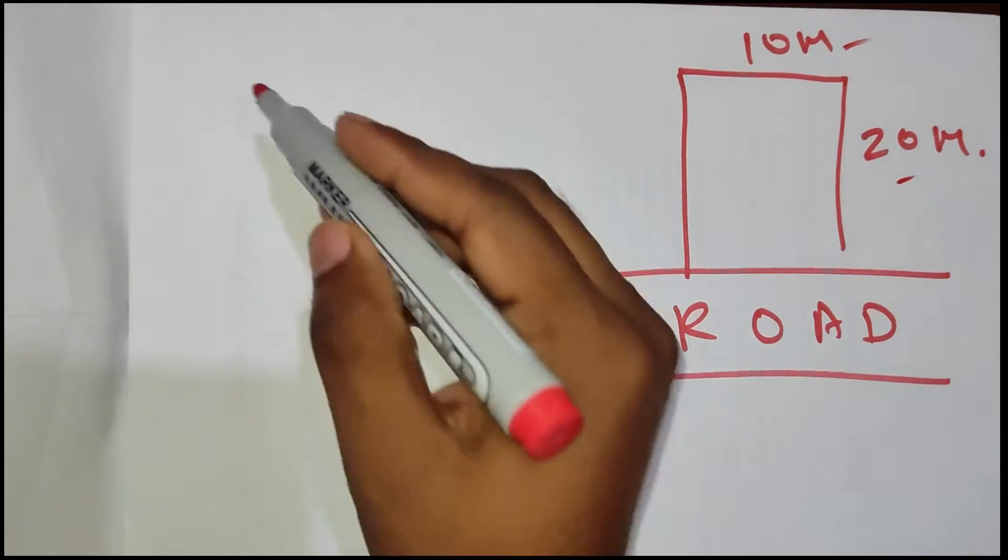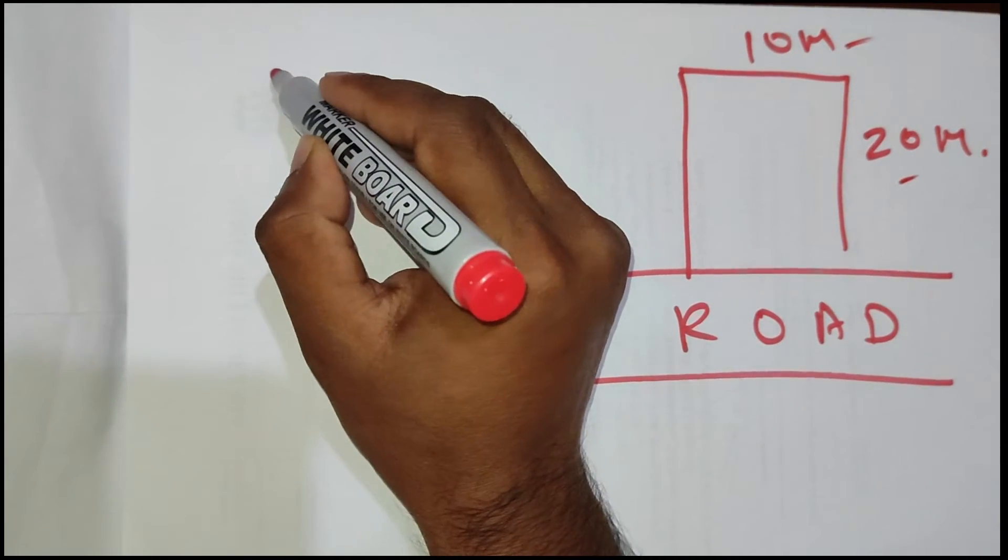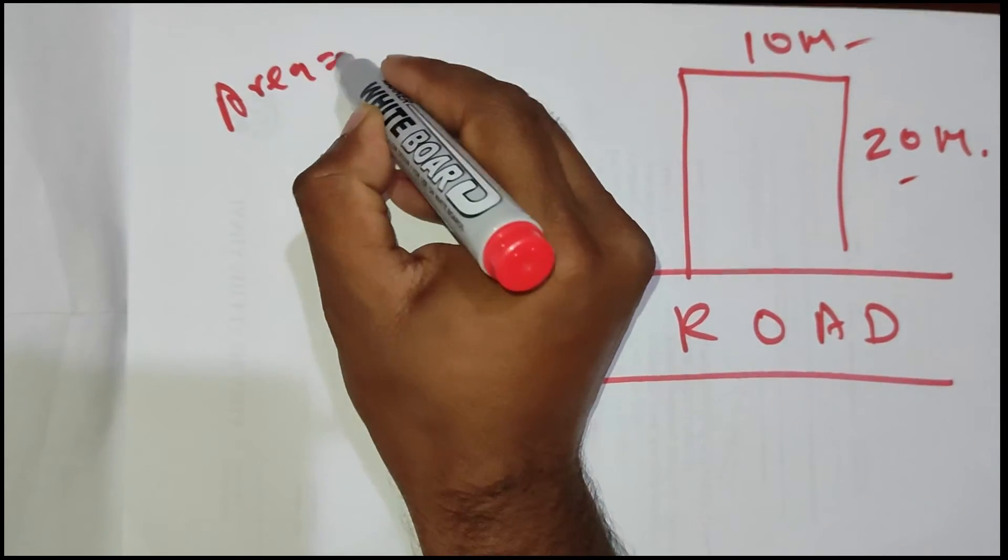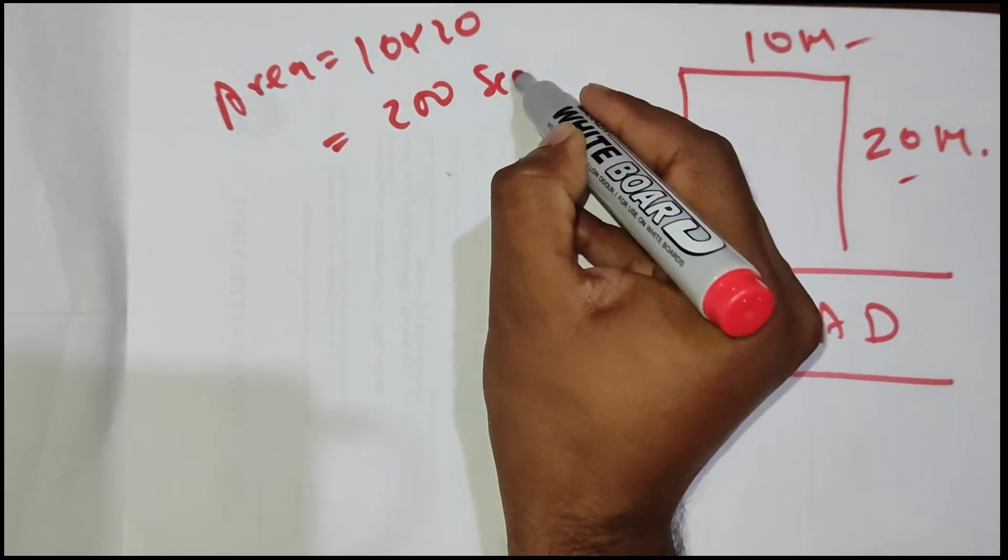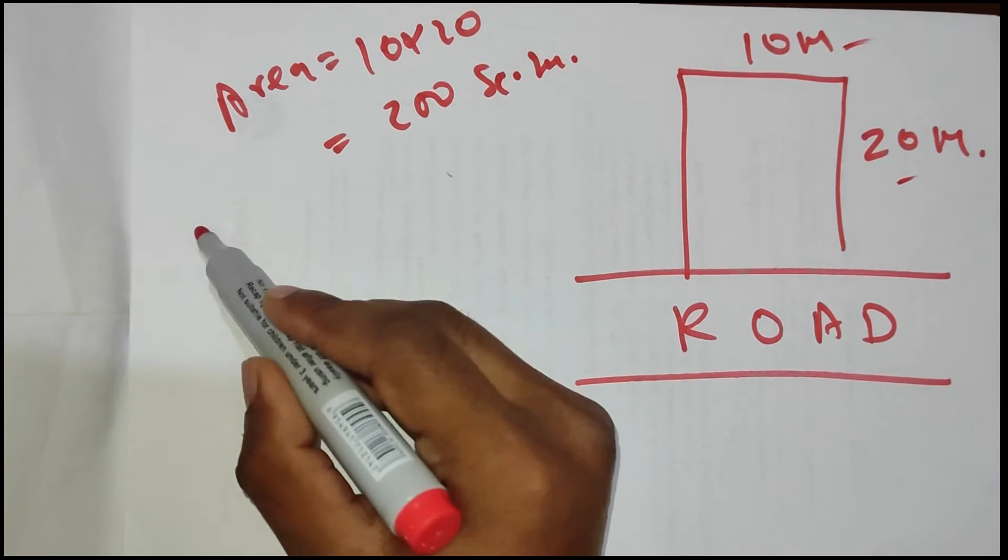The site dimensions are 10 meter by 20 meter, so the site area will be 10 by 20, which equals 200 square meters.